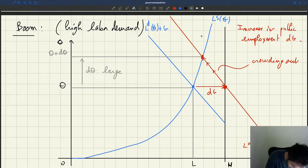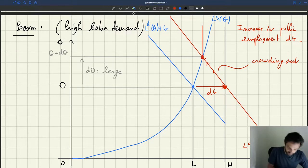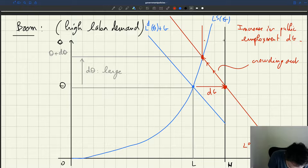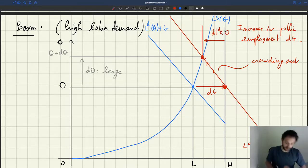And so this distance here, that's the amount of crowding out. So that's DL_D, which is negative. That's the reduction in labor demand here, which is quite large.